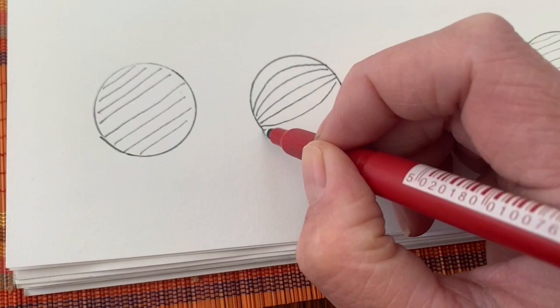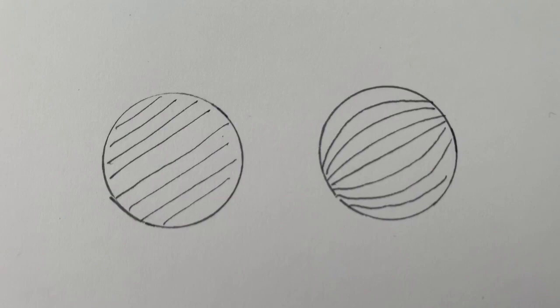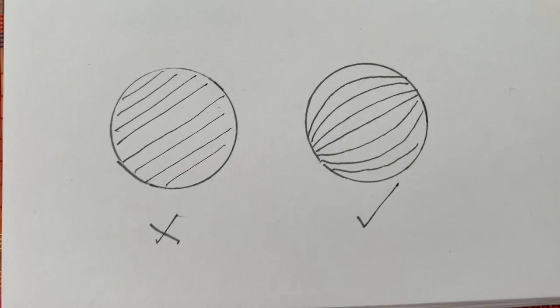Now this curved line is going to make that circle appear more like a sphere, so it's going to make it look more 3D. Compare the one on the left that's not 3D with the one on the right that is 3D.